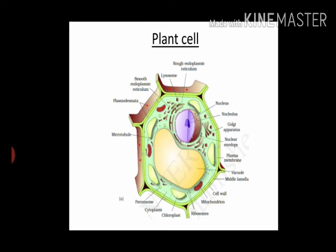You can see the nucleus here; if the nucleus is there, obviously the nucleolus and genetic material will be there. You can also see the Golgi apparatus, plasma membrane, and the cell wall. Mitochondria are shown in red, and ribosomes are very small. Chloroplast is widely present — it contains chlorophyll, which helps in synthesizing food and is the reason the plant looks green due to the pigment. Cytoplasm, microtubules, endoplasmic reticulum — both smooth and rough types — and lysosomes are also present.